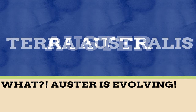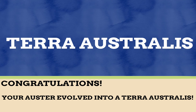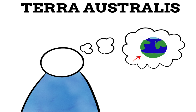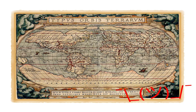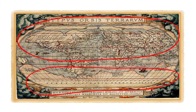This name evolved into the idea of Terra Australis. Terra Australis was the idea of a continent in the southern hemisphere of the earth, and even appeared on maps between the 15th and 18th century. There was no clear evidence that Terra Australis actually existed, but people just presumed that if there was a huge amount of land in the north, then it must be balanced in the south.